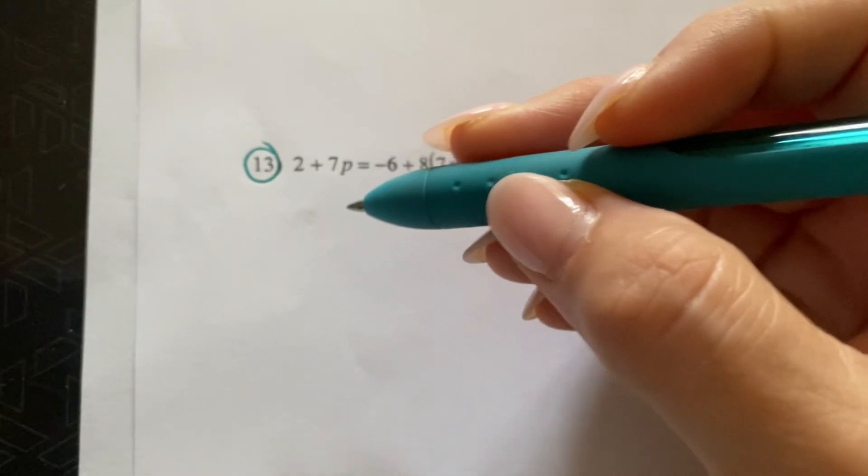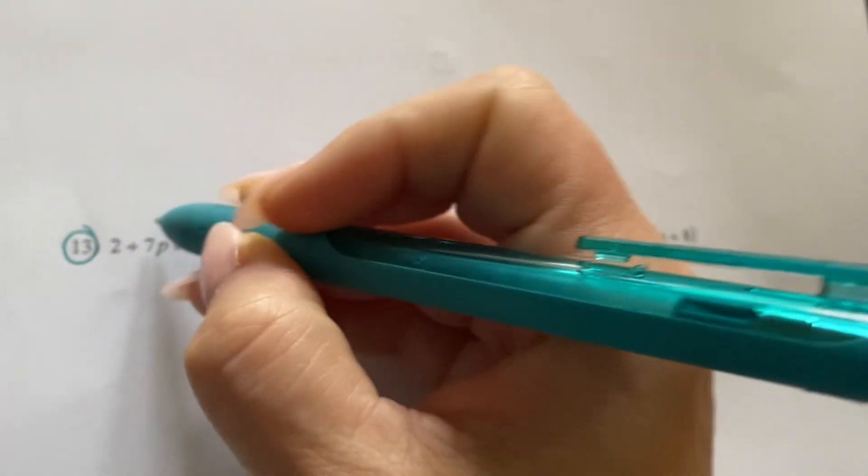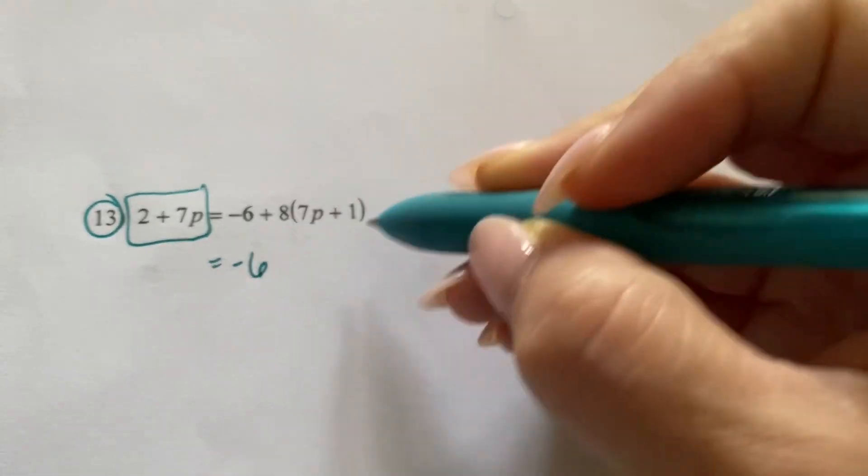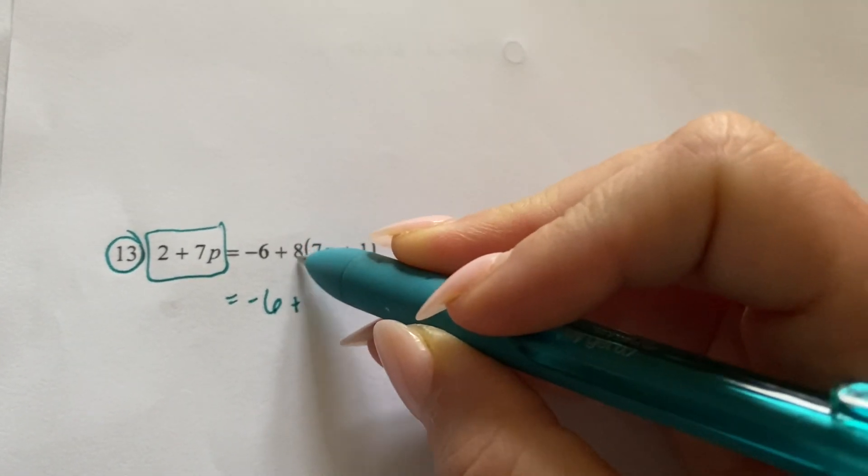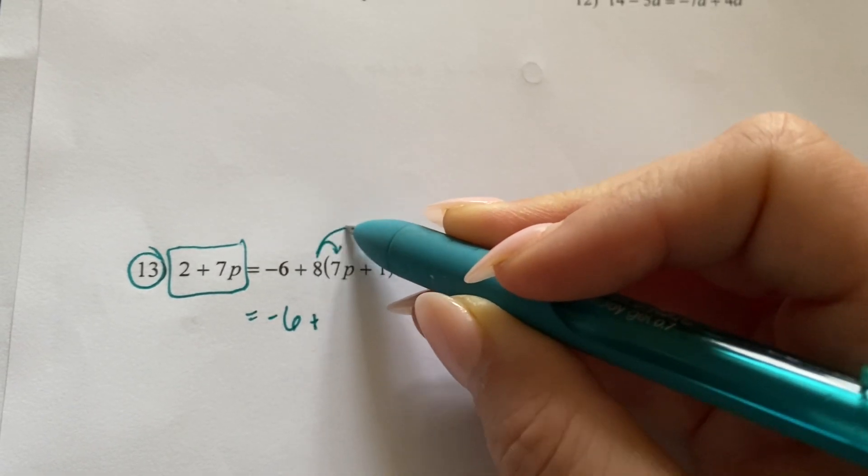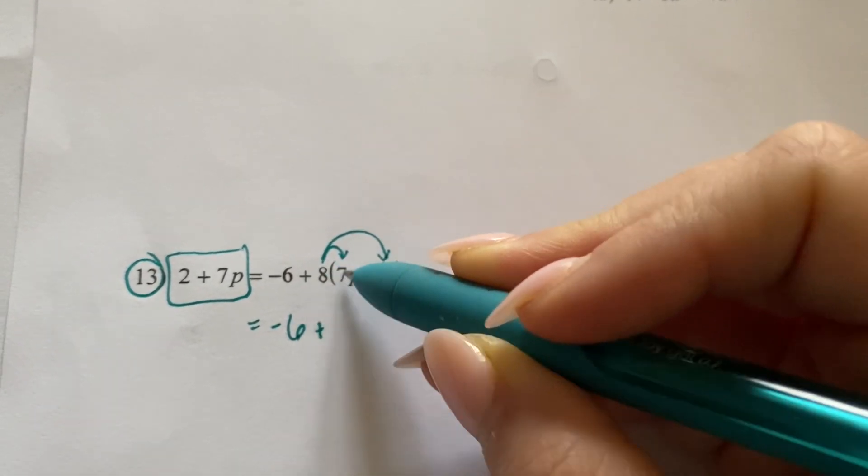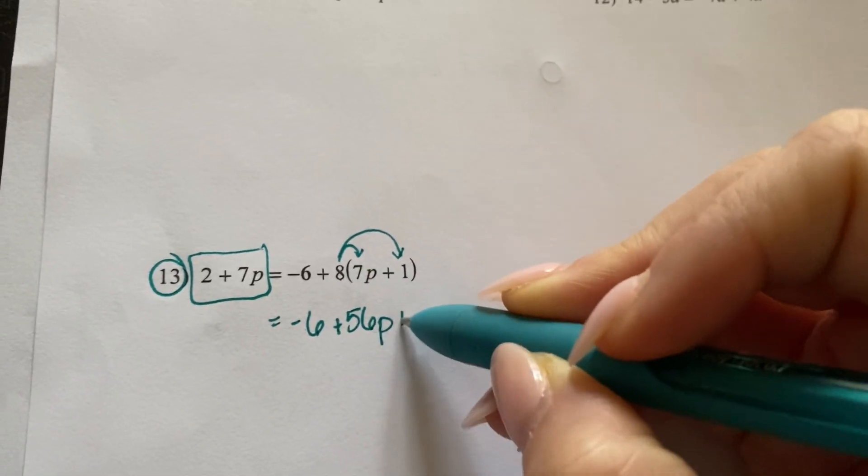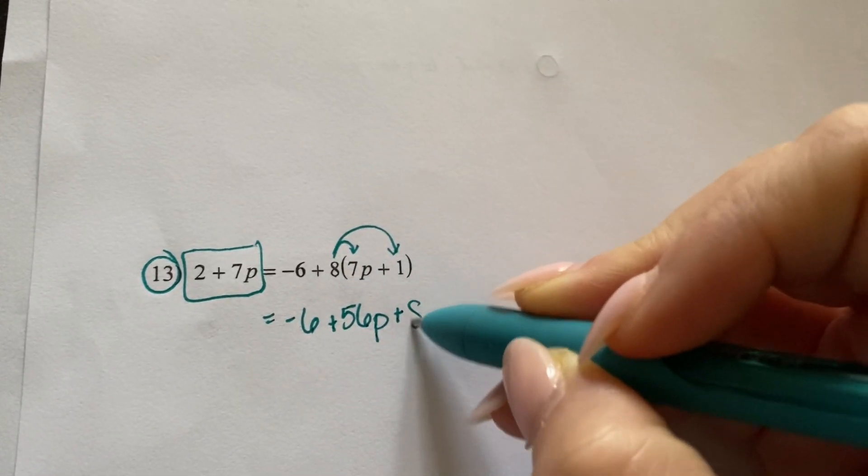So I'm going to keep this one. And so now I'm going to do negative 6 plus 8 times. I'm going to distribute the 8. 8 times 7 is 56P plus 8 times 1 is 8.